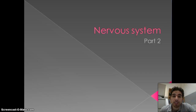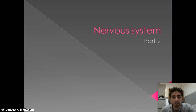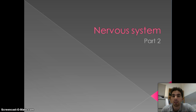Hello everyone, this is the second part of the nervous system podcast. As I covered in the first part, we looked at parts of the nervous system, the nature of the nervous system, the neuron which is the nerve cell, and action and resting potential. Now we will move to the second part.